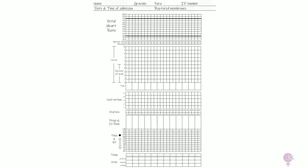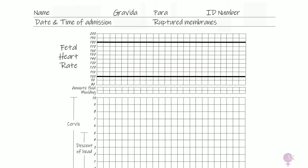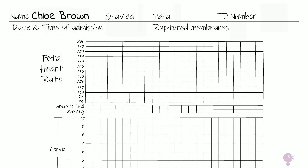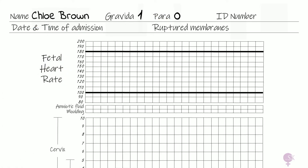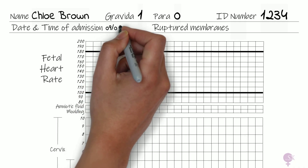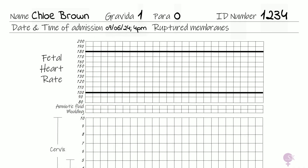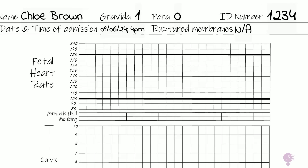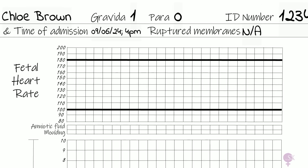As per usual, we start off with her details: Chloe Brown, Gravida 1, Para 0, ID number 1234, date of admission 9th of June 2024 at 4pm, and membranes have not ruptured yet. We note down the fetal heart rate. We put a slash for amniotic fluid since membranes are still intact, and note no molding.